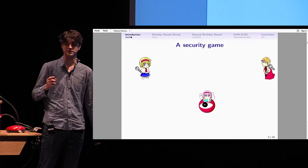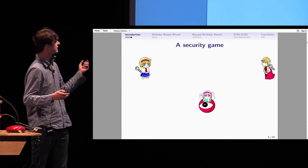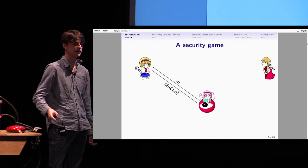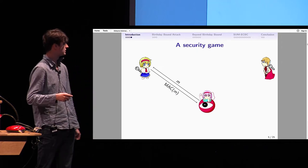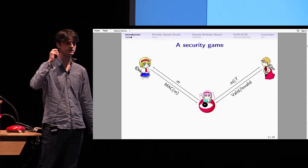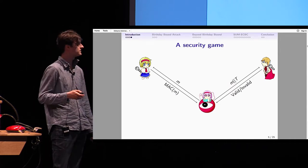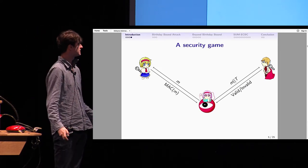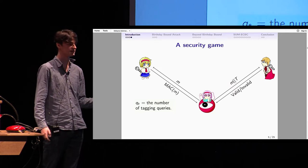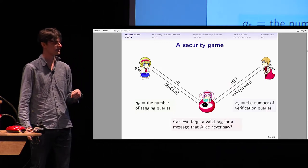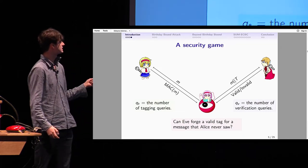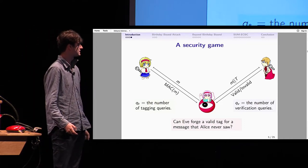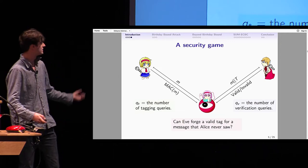To answer this question, traditionally we imagine a security game. We have Eve. We give her some power. She can ask Alice for any message and get the MAC of this message. She also can send a pair of message and tag to Bob and get the answer whether it's valid or invalid. The security game is: given Qt tagging queries and Qv verification queries, can Eve forge a valid tag for a message that Alice didn't see? And how much queries will it need?